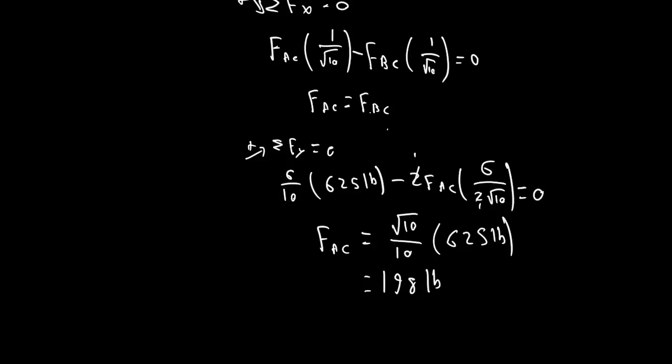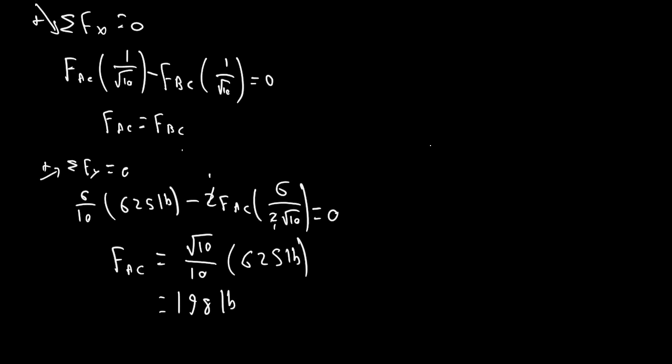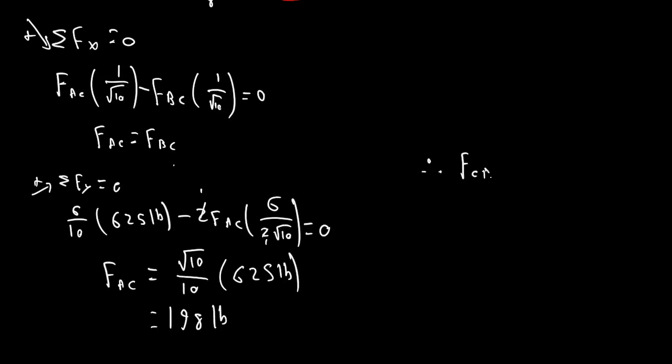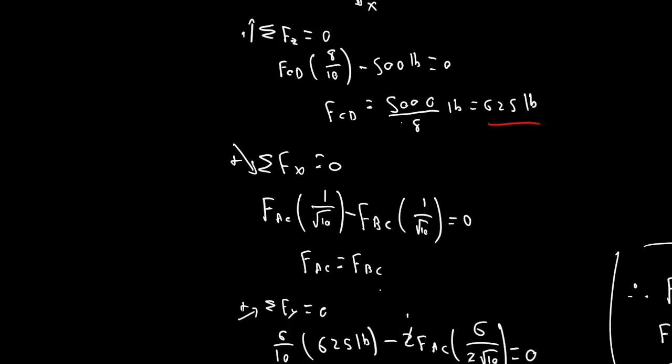And Fac, which is the same as Fbc. And these are all under tension because they're cables. So, overall, therefore, Fcd, 625 pounds. F, A, C, 198 pounds. F, B, C, 198 pounds. And that's our solution to this very simple 3D statics problem.